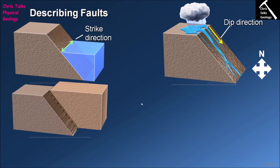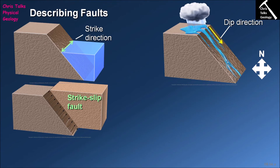When we're describing faults we describe how the blocks of rock move relative to each other. In this first instance, two blocks of rock are moving relative to each other but are not changing their relative height. What is changing is that one block is moving away from the other along the strike of the fault plane — there's no vertical change, only a lateral change. This type of fault is referred to as a strike-slip fault because the slip occurs parallel to the strike.